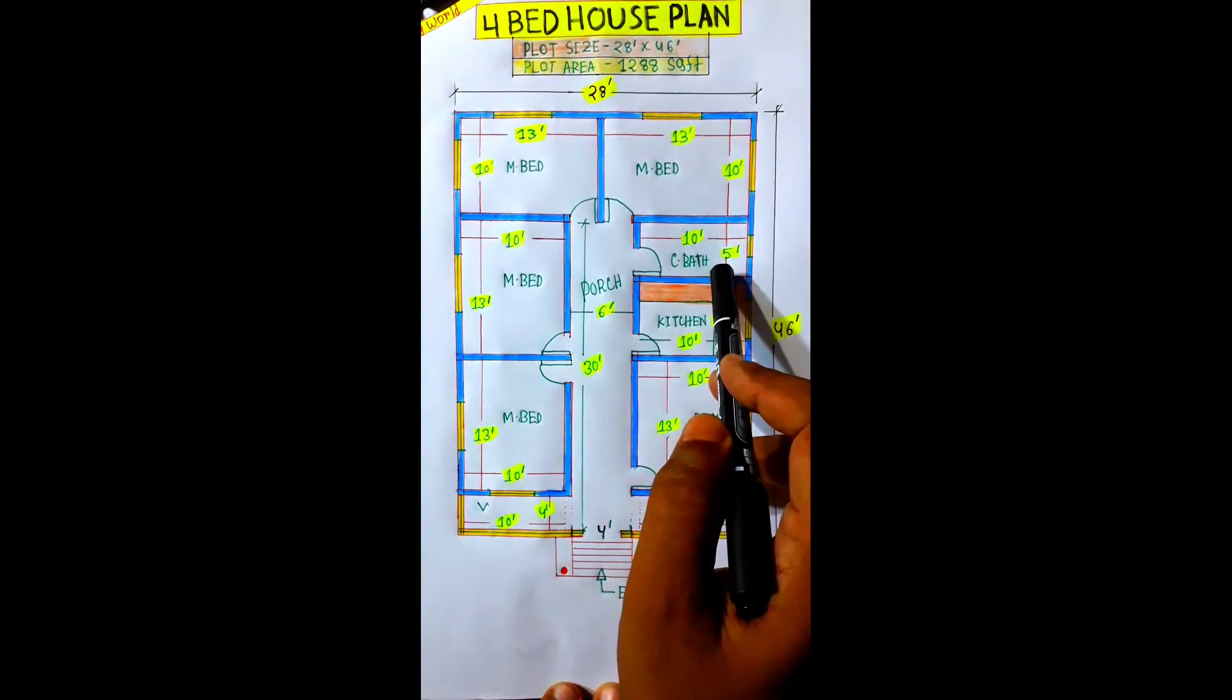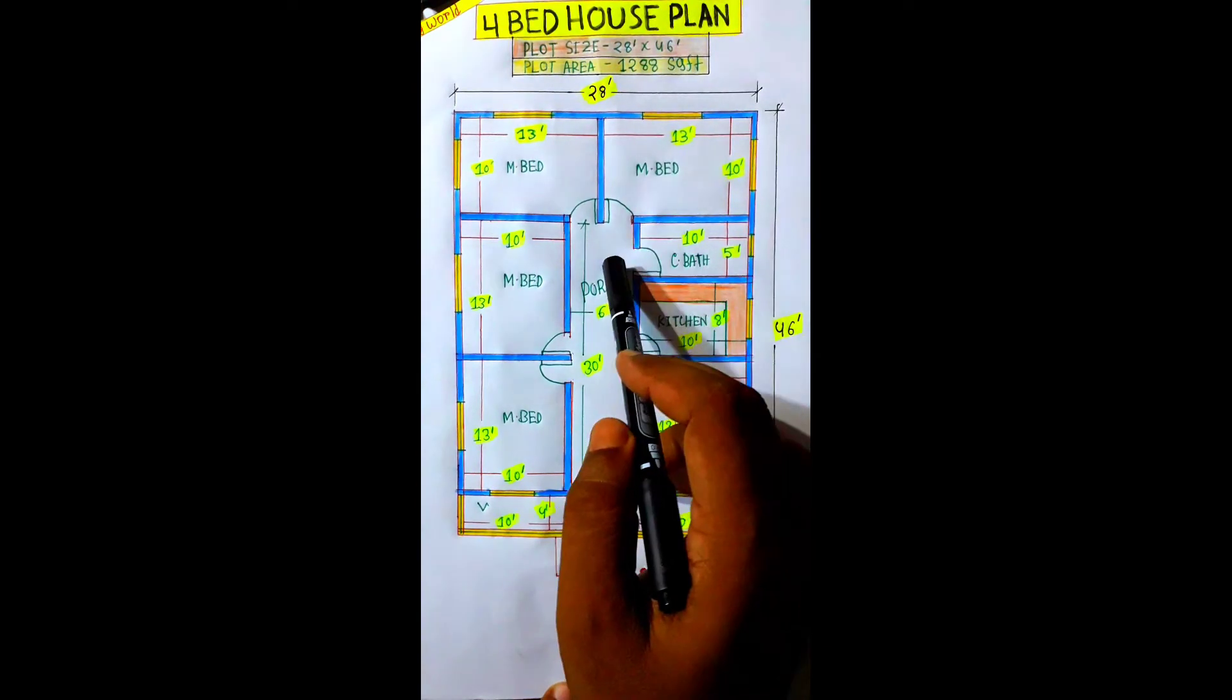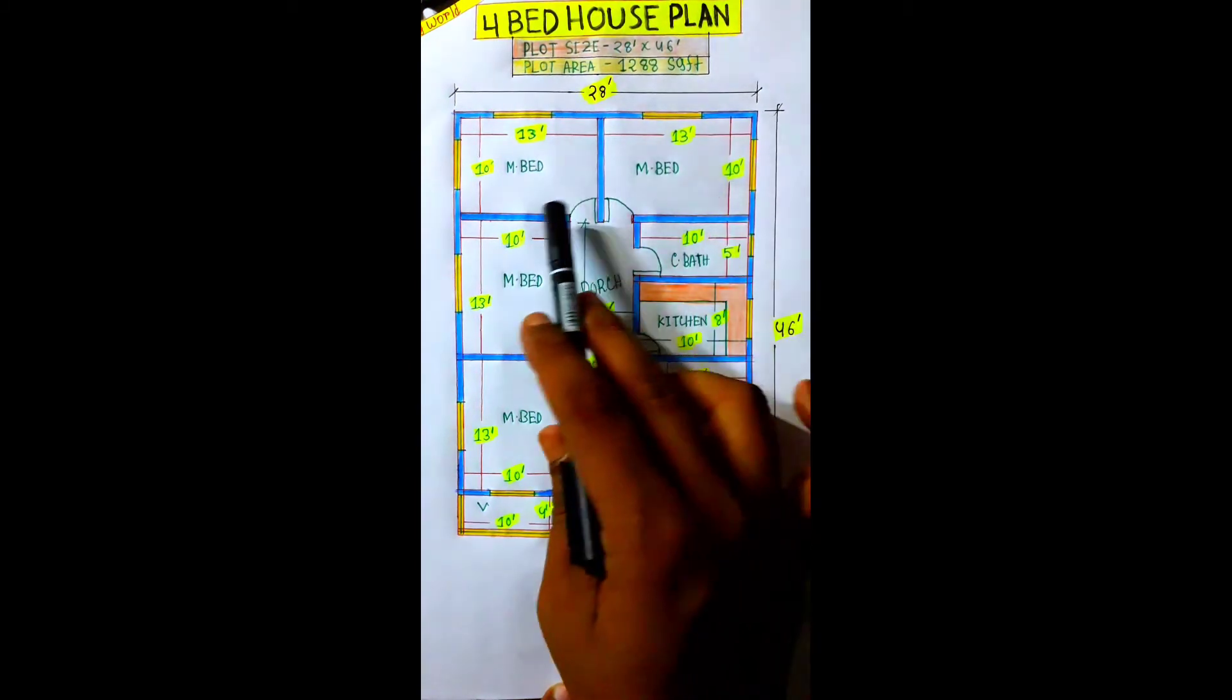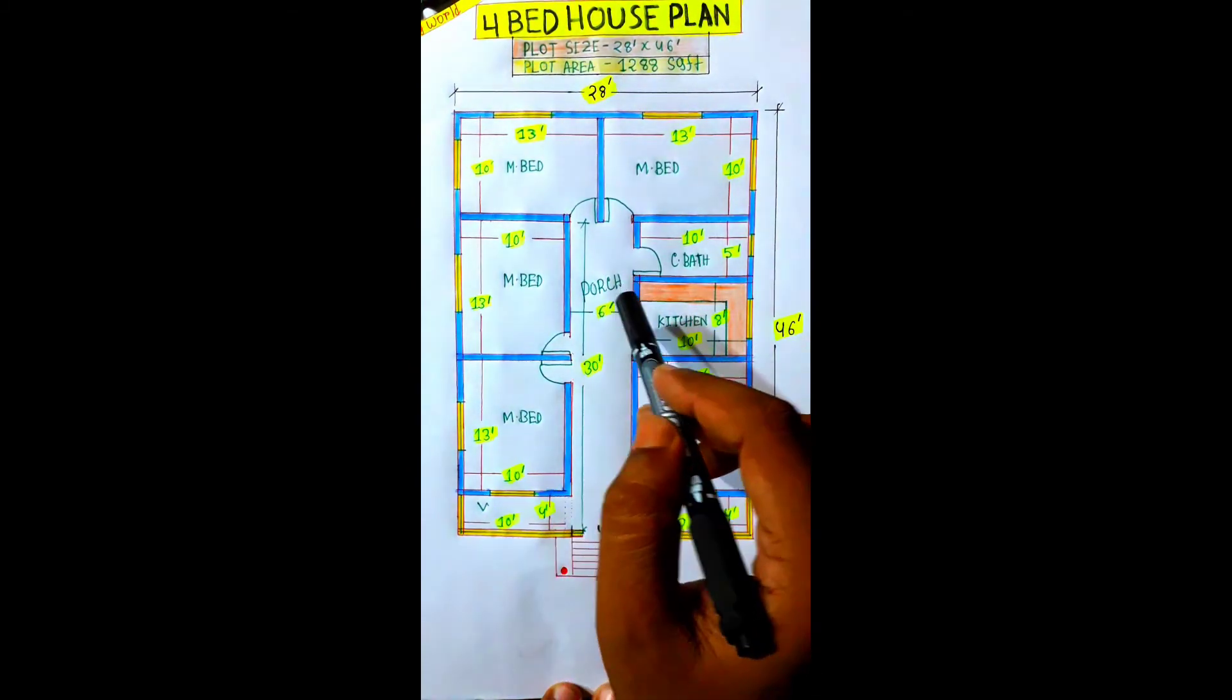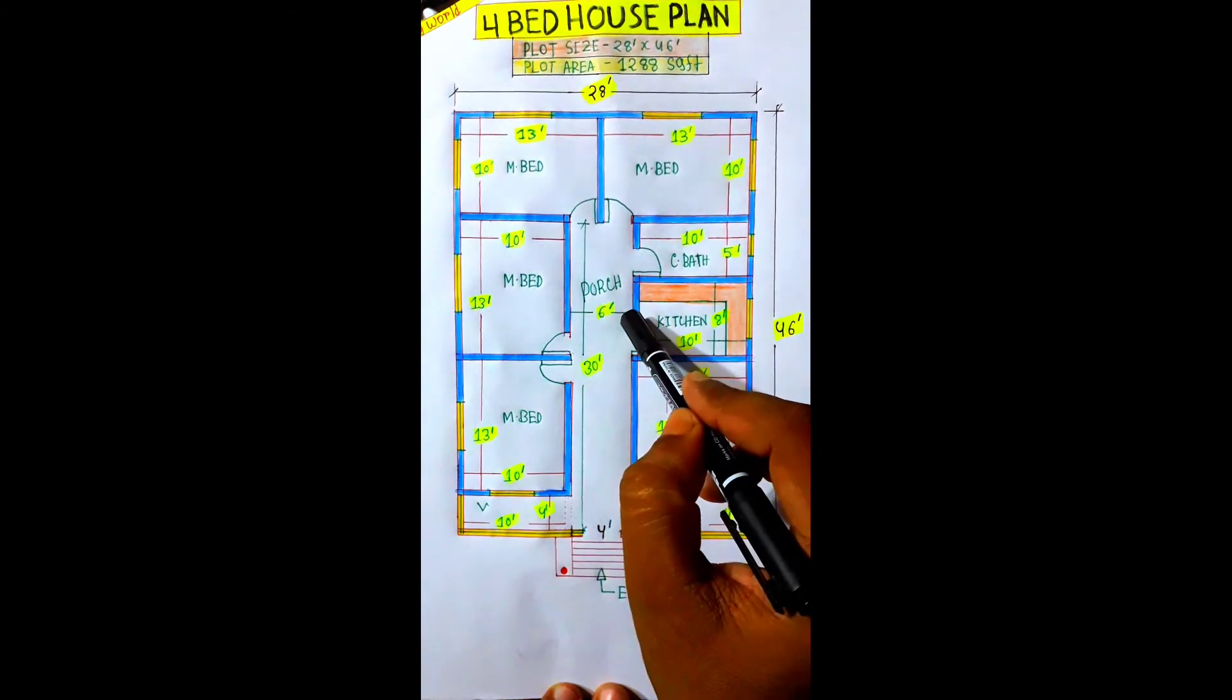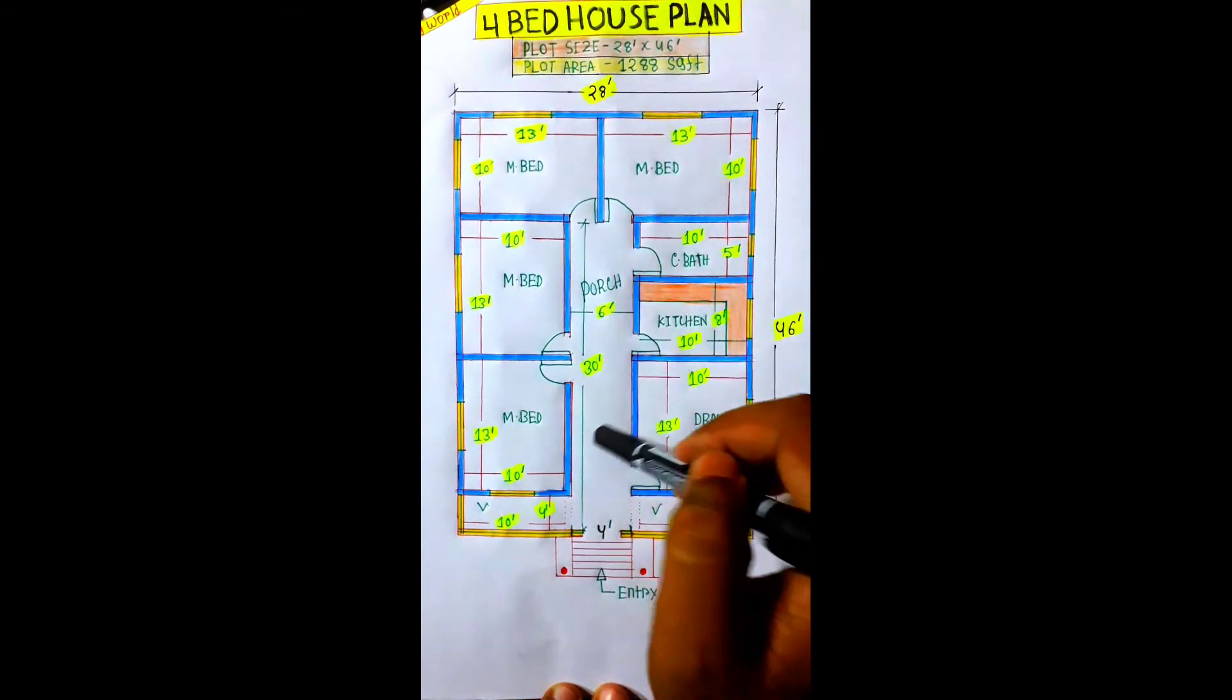We provide a common toilet, 10 feet by 5 feet. We provide a master bedroom, 13 feet by 10 feet. And here is the size of 6 feet by 30 feet.